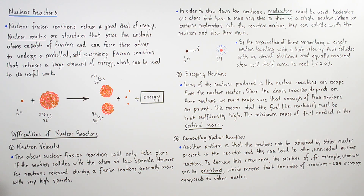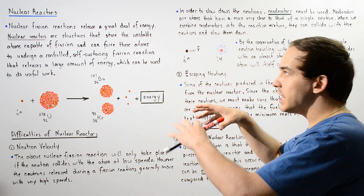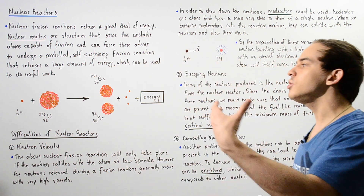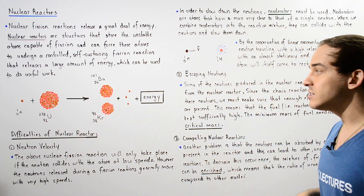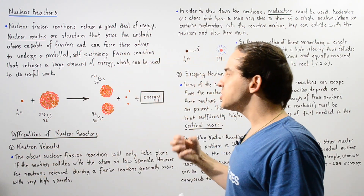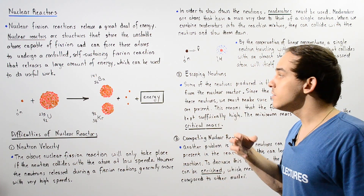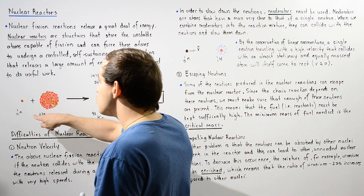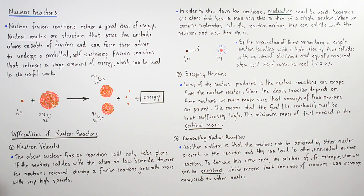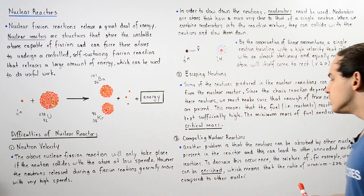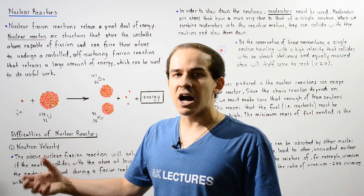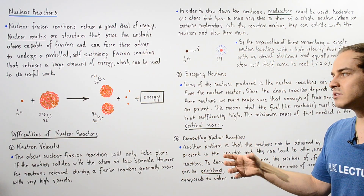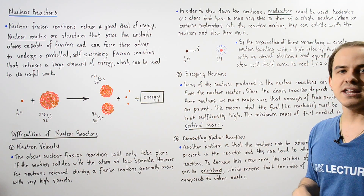Problem number three involves competing nuclear reactions. Within our nuclear reactor, we not only have uranium-235 isotopes but also other uranium isotopes. These other uranium isotopes can also absorb neutrons, leading to other products that we don't actually want. One way to fix this is by increasing the ratio of uranium-235 compared to other uranium isotopes — this is called enriching our uranium. When we enrich our uranium, we basically increase the concentration or percentage of uranium-235 fuel found in our nuclear reactor compared to other uranium isotopes.